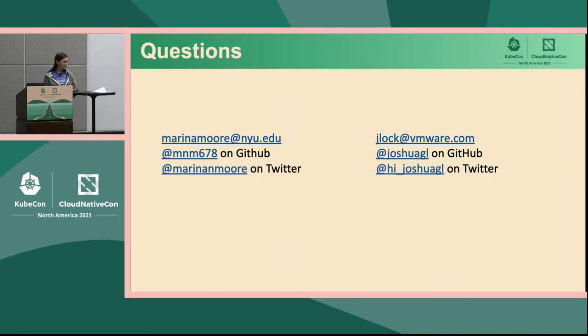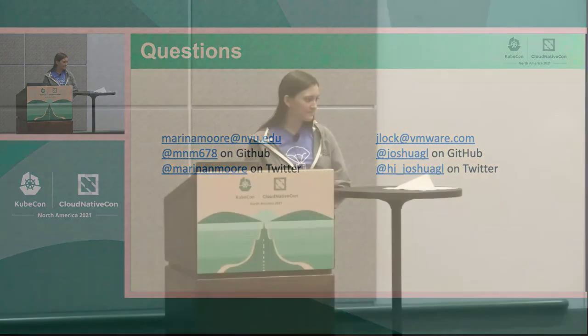We have a question online: cosign allows the uploading of signatures to registries as OCI manifests — does this conflict with what is being proposed with TUF and Notary V2? I wouldn't say it conflicts. I think they're both working in a similar space with slightly different models and slightly different uses of the registries. So I think they're similar but different.